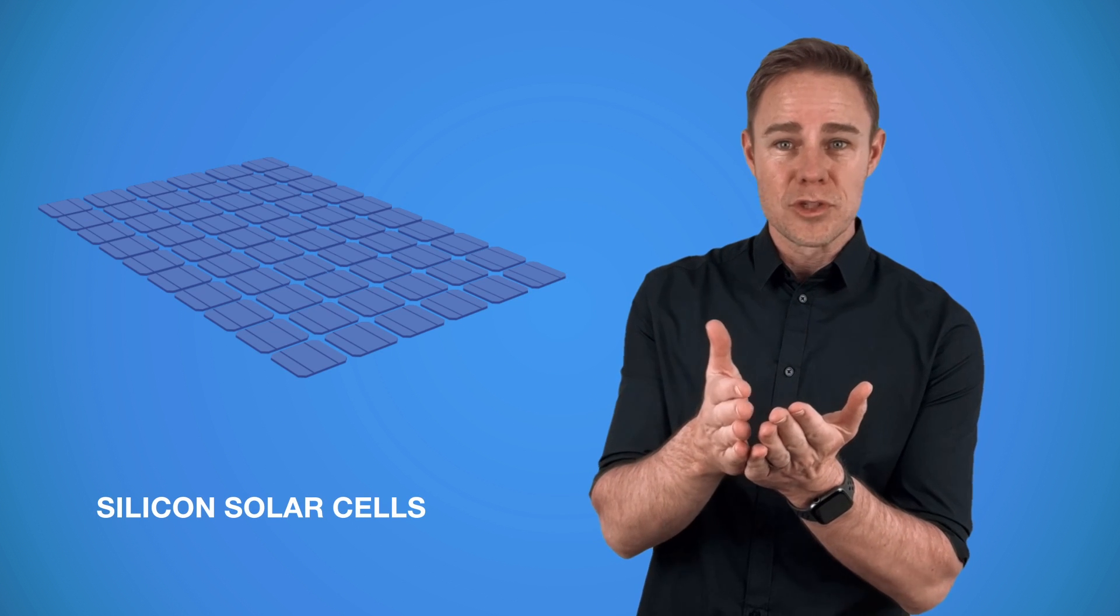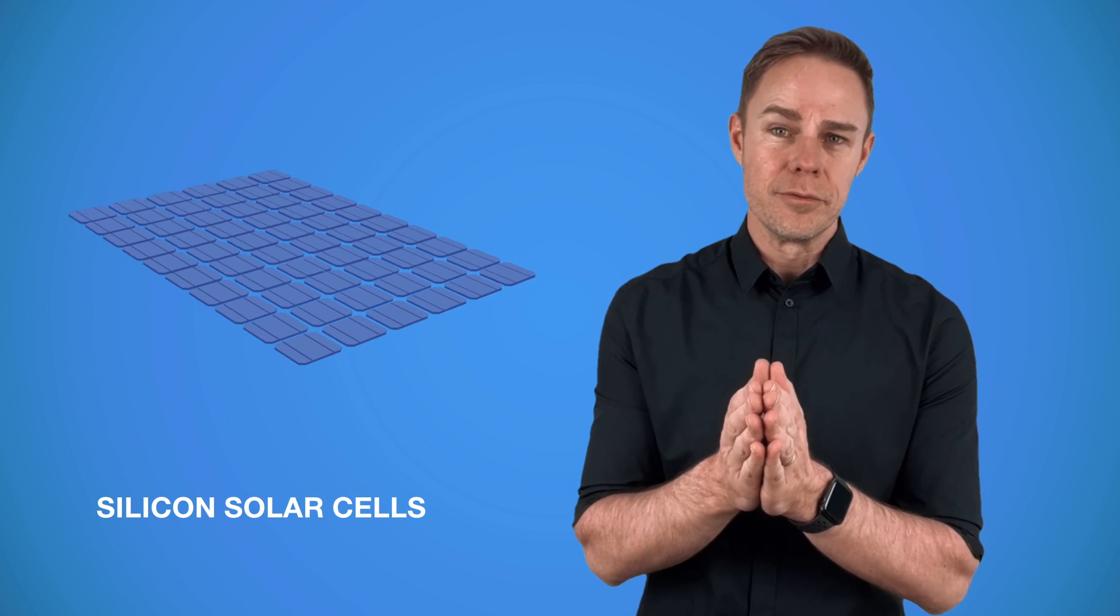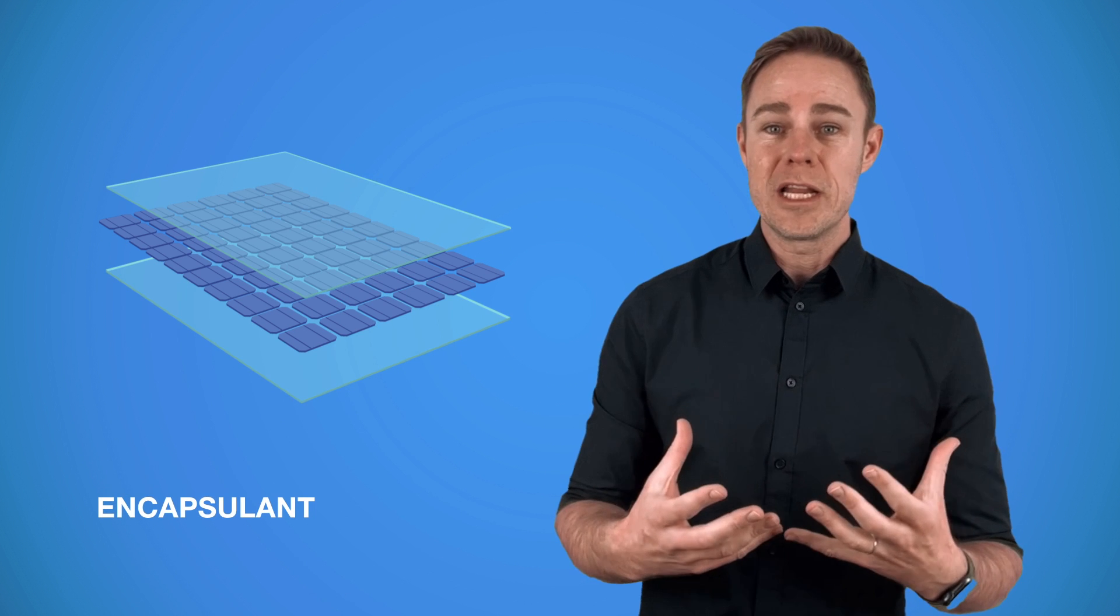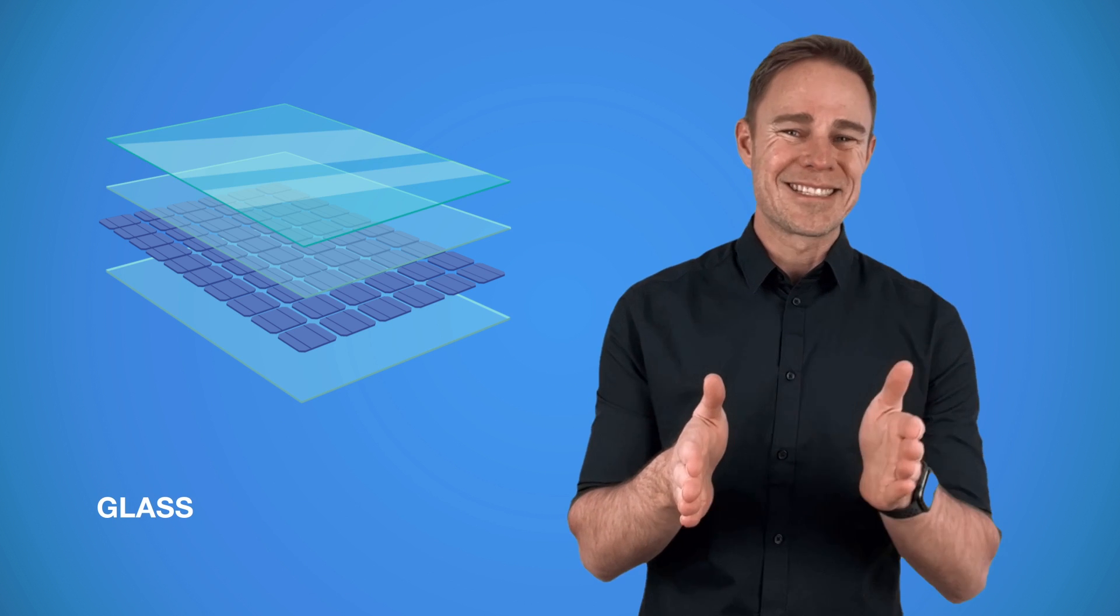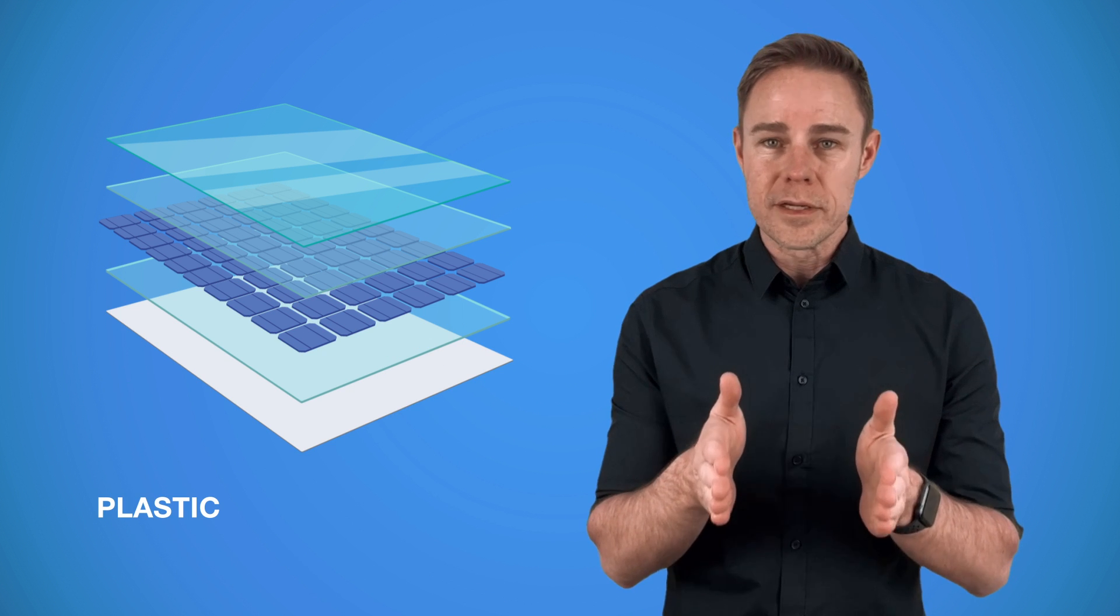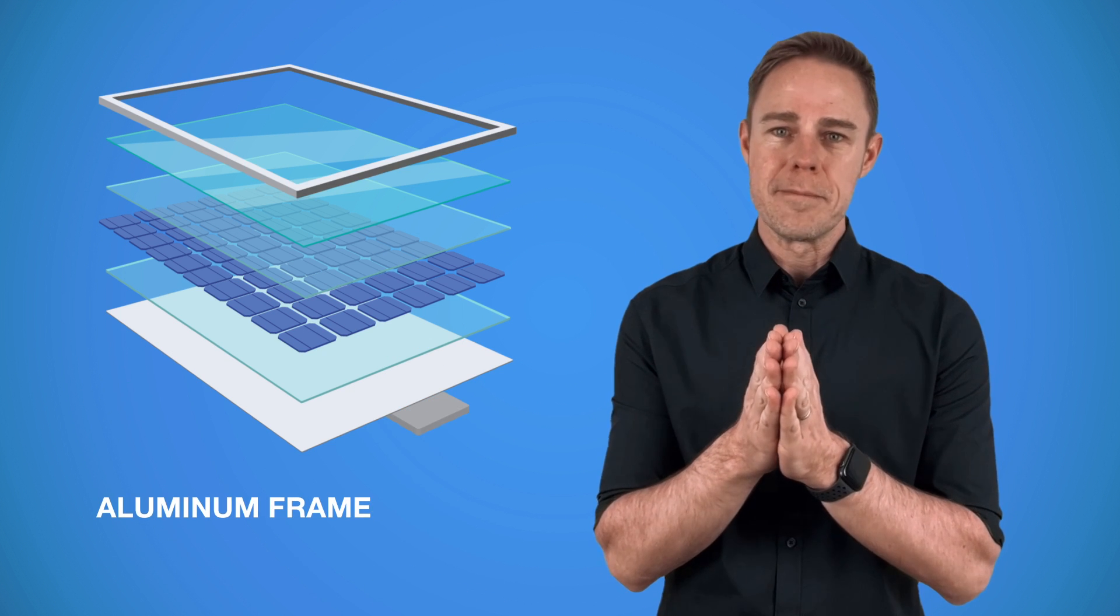In the middle we have solar cells, which are small wafers made of silicon. These wafers are encapsulated from both sides. The front side is covered with glass and the back side is plastic. All of it is packed into an aluminum frame.